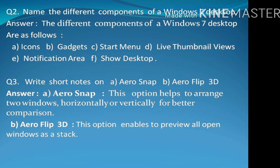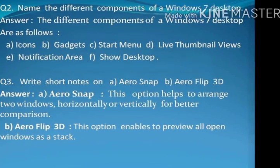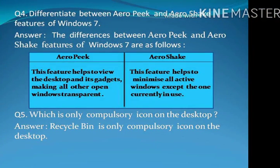Question number 3: Write short notes on A) Arrow Snap and B) Arrow Flip 3D. Answer. A) Arrow Snap: This option helps to arrange two windows horizontally or vertically for better comparison. B) Arrow Flip 3D: This option enables to preview all open windows as a stack.